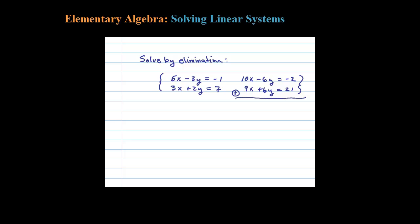What I'm going to do is add these equations together, and that leaves me with 19x = 19. That allows me to solve for x, so dividing by 19, you get x = 1.